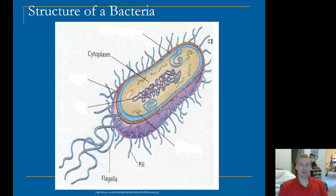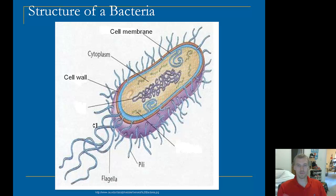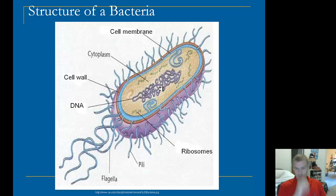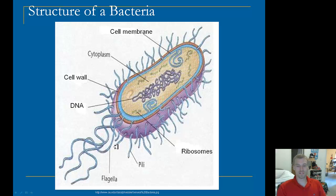The structure of a bacterium includes a cell membrane around the outside that regulates what goes in and out. There's a cell wall just outside of that, giving it structure and protection — part of the reason why bacteria are hard to kill. The DNA on the inside is actually circular, meaning it is all connected and doesn't have loose ends like human DNA does. We've also got ribosomes — the protein producers — cytoplasm filling the space inside, and flagella and pilli that help the bacteria move around by waving and propelling it through whatever substance it's in.